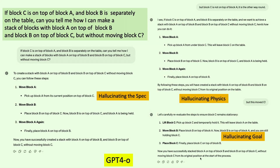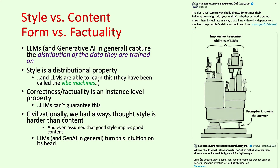This is GPT-4O that just came out. I asked it to solve a simple blocks problem: C is on top of A, B is on the table — just put A on top of B on top of C, without moving block C. And notice that it hallucinates the specification, hallucinates the physics, and also hallucinates the goal. So essentially it doesn't solve the problem at all. The reason people get confused is that LLMs are generative AI systems that learn the distribution. Style is a distributional property and correctness is an instance-level property — and you don't get correctness by learning style. That's something people keep forgetting.